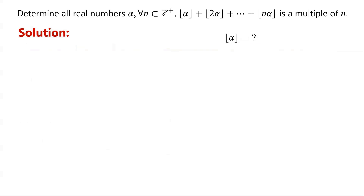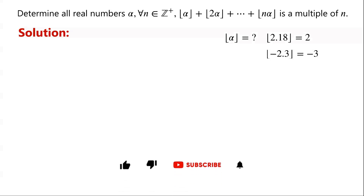For example, floor of 2.18 is 2, as 2 is the greatest integer less than or equal to 2.18. Floor of negative 2.3 is negative 3, as negative 3 is the greatest integer less than or equal to negative 2.3.